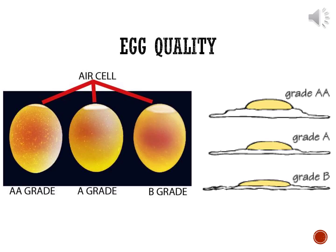Double A is the highest quality and B is the lowest quality that's sold — though B is still going to give you a good egg, just not the same quality as double A. In the B grade, you can see a much larger air cell has formed. The yolk structure is definitely lower, the white is definitely lower, and the overall structure is much weaker in the grade B egg compared to the A and double A egg.